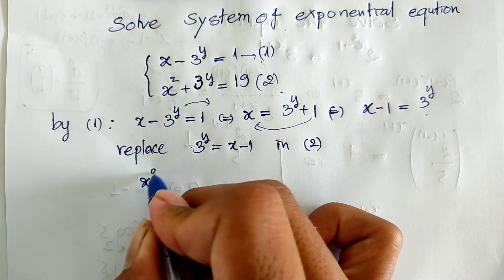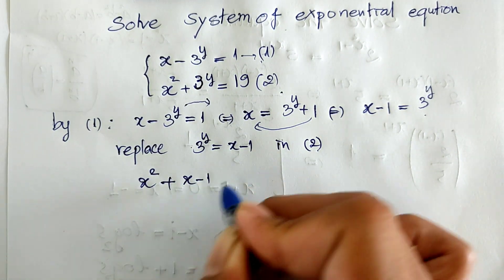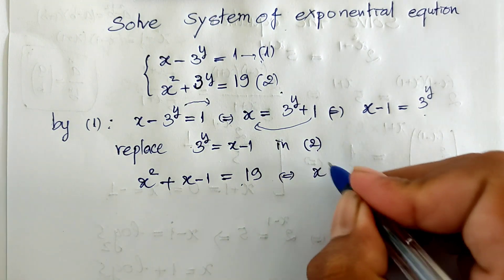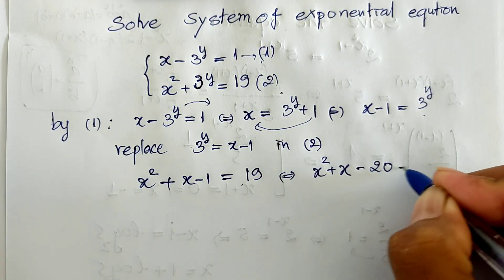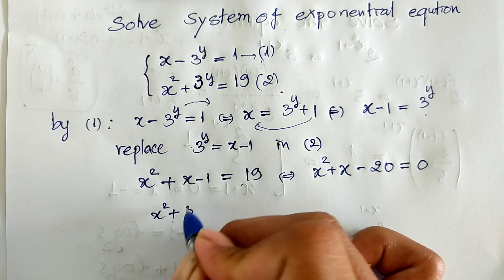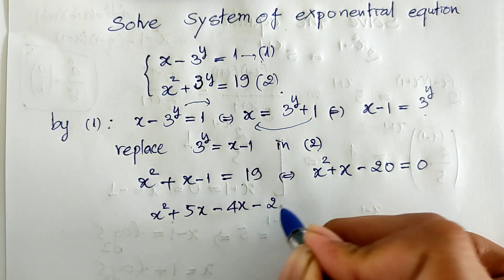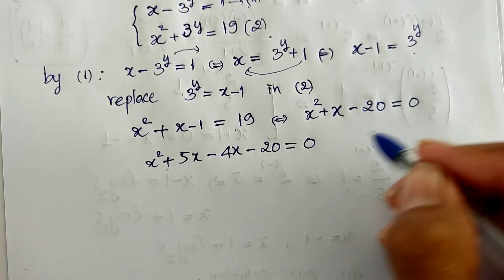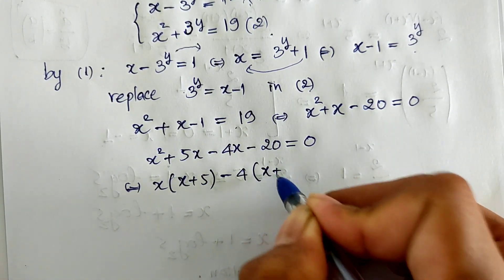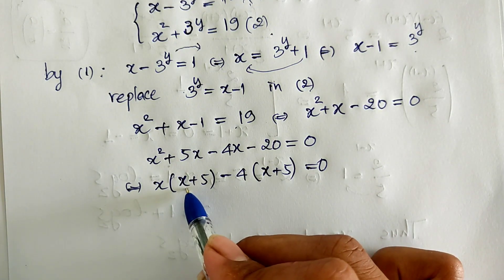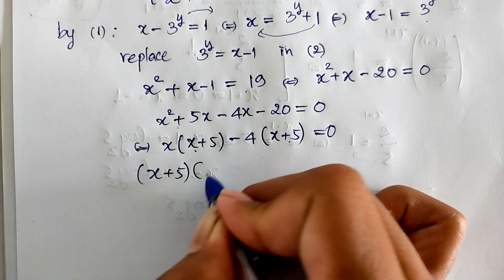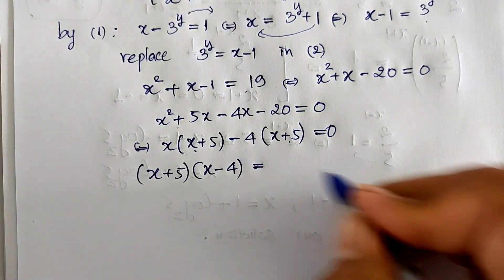Substituting, we get h squared plus (h minus 1) equals 19, which gives h squared plus h minus 1 equals 19. Moving 19 to the left side: h squared plus h minus 20 equals 0. I factor this as h squared plus 5h minus 4h minus 20 equals 0, giving h(h plus 5) minus 4(h plus 5) equals 0, so (h plus 5)(h minus 4) equals 0.